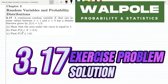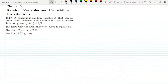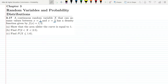Hello guys, welcome to my YouTube channel. This is question 3.17 of chapter 3. The statement is: a continuous random variable x that can assume values between x equal to 1 and x equal to 3 has a density function given by f of x equal to 1 by 2.